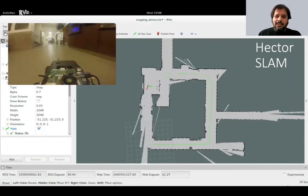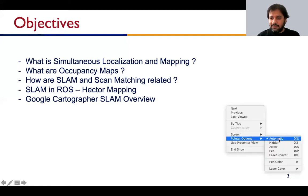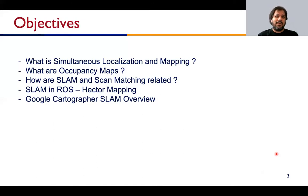By the end of today's lecture you will know what SLAM is. We'll talk about some prevalent implementations of SLAM, in particular building occupancy maps as the basic building block of mapping. I'll tie this back to scan matching, which we've spent a lot of time on previously. Time permitting, we'll go into details of how SLAM is implemented in ROS, and I'll walk you through a popular recent algorithm called the Google Cartographer algorithm.